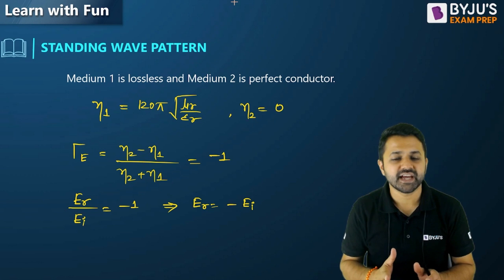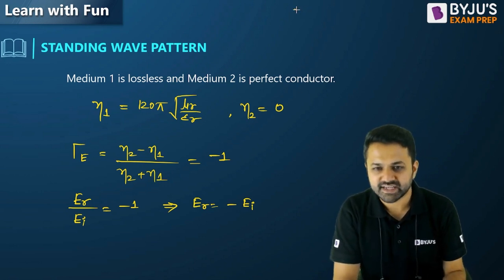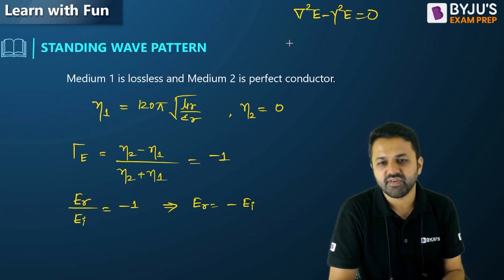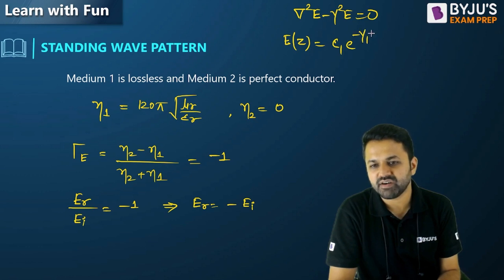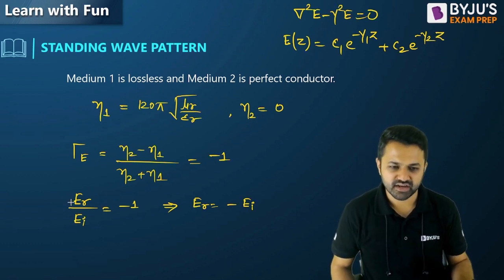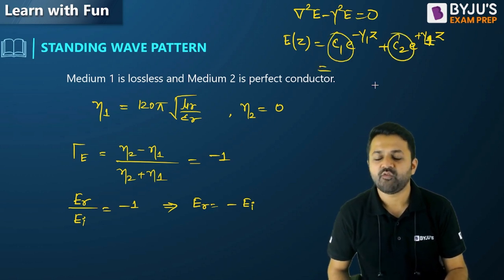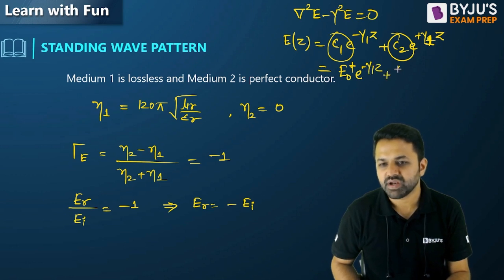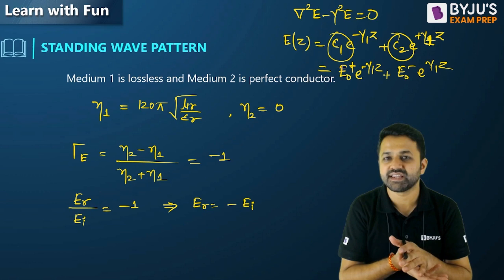When I write the equation of the electric field from the wave equation, the solution of the Helmholtz equation ∇²E − γ²E = 0 comes as E = C1·e^(−γ1z) + C2·e^(+γ1z), where C1 and C2 are the forward and reverse traveling wave constants. We write this as E0⁺·e^(−γ1z) + E0⁻·e^(+γ1z).